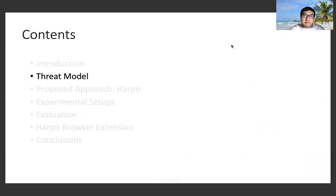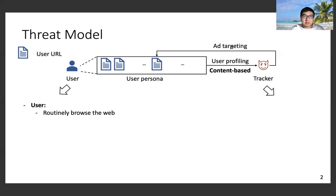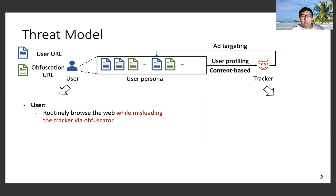Before presenting our solution, we will first describe our threat model, which involves two parts: the user and the tracker. The user will visit web pages, and the tracker will perform user profiling and ad targeting based on the content of the web pages visited by users. However, privacy leakage can happen since the tracker can know exactly what the user's interests are. In order to protect such privacy, we assume that the user will mislead the tracker via obfuscation.